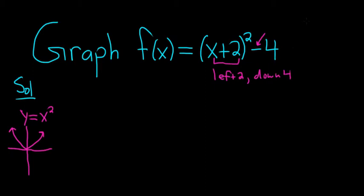So for example, if instead it was x minus 2 quantity squared, this would be right 2. x plus 2 was left 2. If it was x squared plus 2, like if the plus 2 was on the outside, it would be up 2.